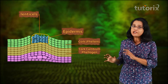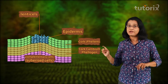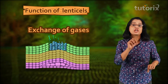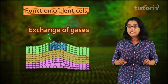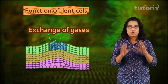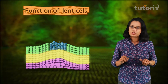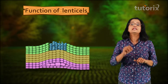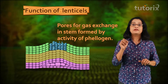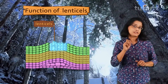These lens-shaped aerating pores formed in the stem are called lenticels. Lenticels are filled with a mass of loosely arranged suberized cells called complementary cells. The function of lenticels is the exchange of gases between the outer atmosphere and the internal tissues of the stem. In temperate regions, lenticels usually get closed during the winter season.